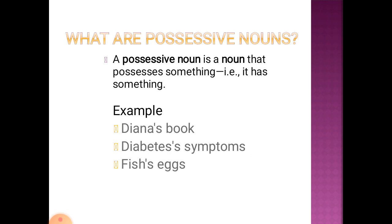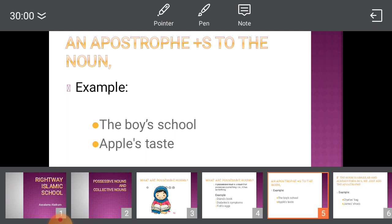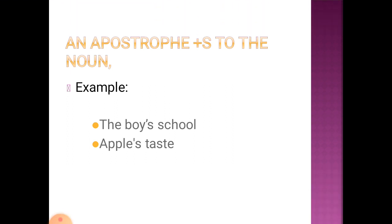Examples are Diana's book, Diabetes Symptoms, Fish and Eggs. If a person or animal has something of its own, we have to use an apostrophe to express ownership. We add a noun plus apostrophe plus s. For example, boy's school and apple's taste.